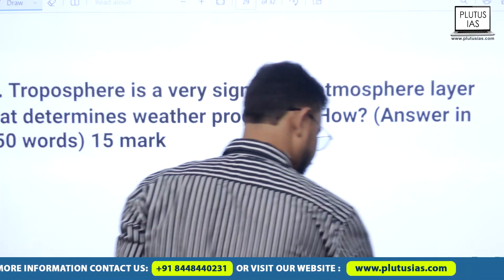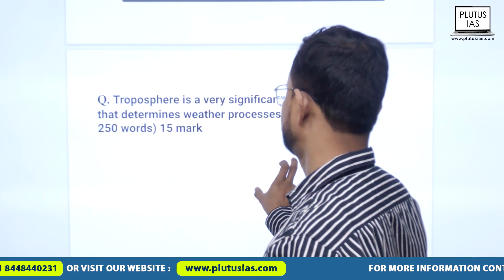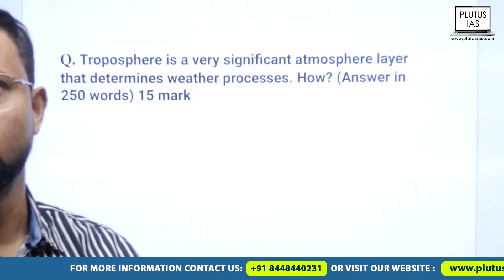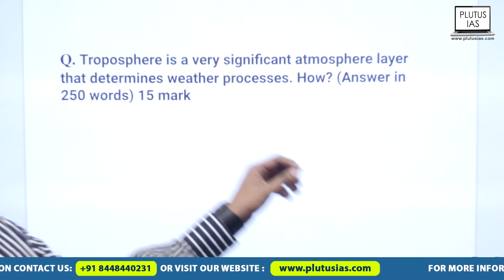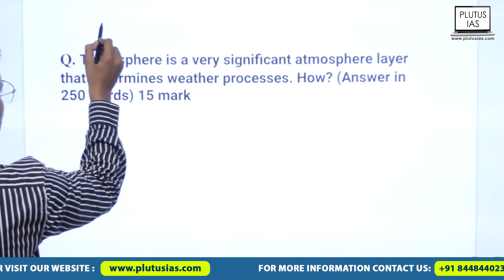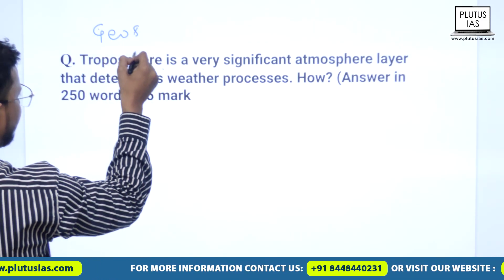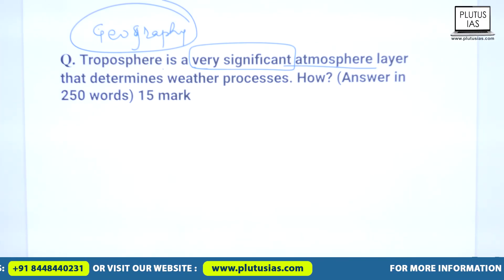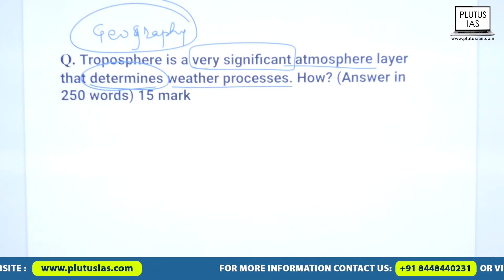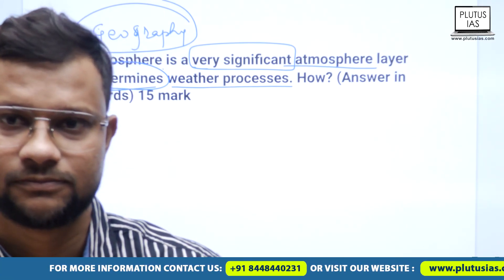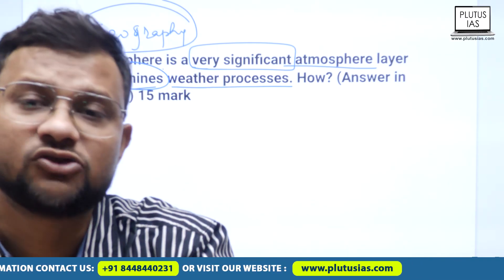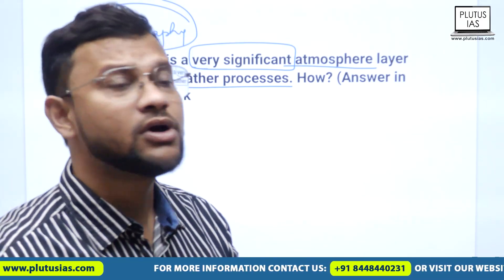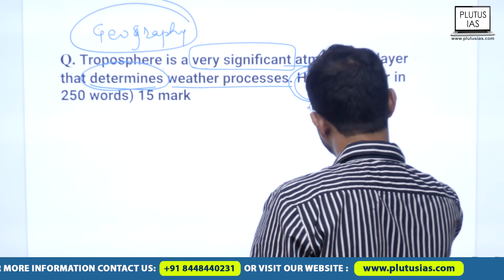The question was asked in UPSC 2022 GS1. It is a geography question about the troposphere: 'Troposphere is a very significant atmospheric layer that determines weather processes.' That is acceptable to all. Now the question is asking you for why and how.